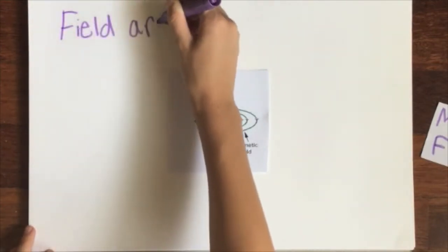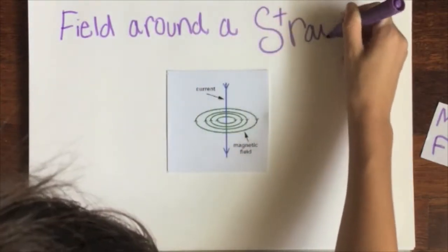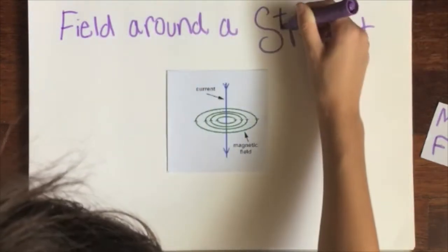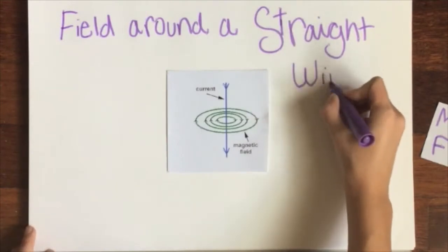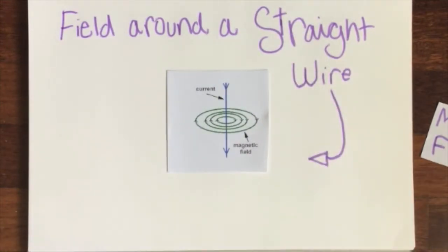This is a field around a straight wire. Magnetic field lines never cross or end. They are strongest when the field lines are most dense. Three magnetic elements are iron, cobalt, and nickel.